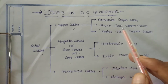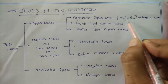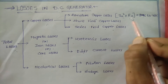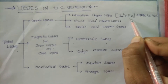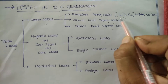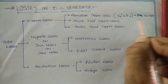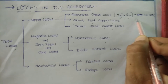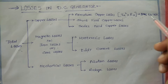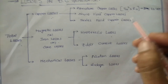The first type is armature copper losses, denoted by I² × Ra, where Ra is the armature resistance and I is the armature current. These losses account for about 30 to 40 percent of the full load losses, meaning 30 to 40 percent of total losses.